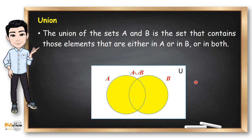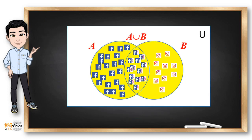The Union of sets A and B is the set that contains those elements that are either in A or in B or in both. In symbols, A Union B is the set containing X such that X is an element of A or X is an element of B. Union is just like addition — all you need to do is combine all the elements. The shaded yellow region in the Venn diagram is the representation of A Union B. Going back to the students example, the Union is all students who have Facebook or Instagram.